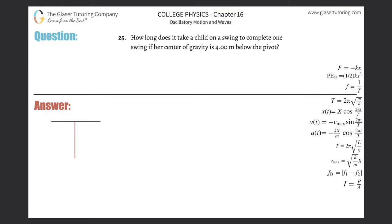Number 25: How long does it take a child on a swing to complete one swing if her center of gravity is four meters below the pivot? All right, so this problem is actually straightforward; however, the way that the problem is presented makes it a little harder.